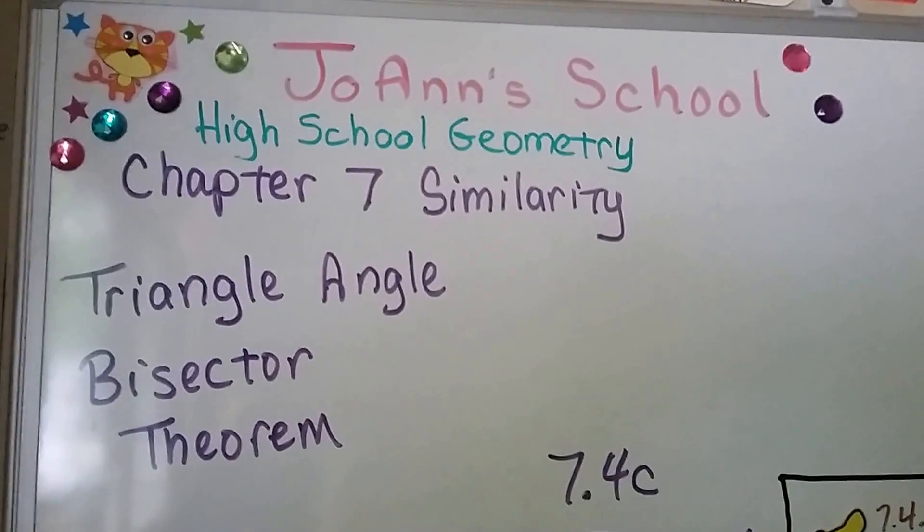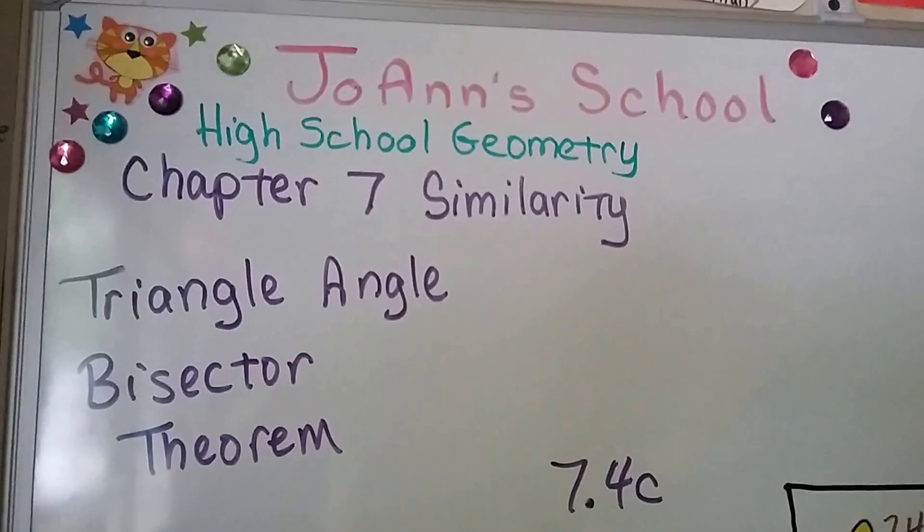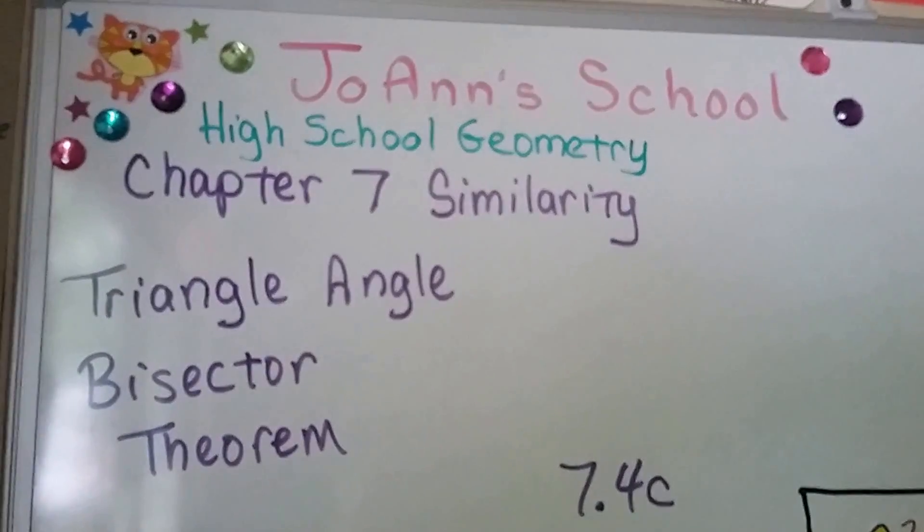Triangle angle bisector theorem, we're at 7.4c, which means this is the third part of the lesson.